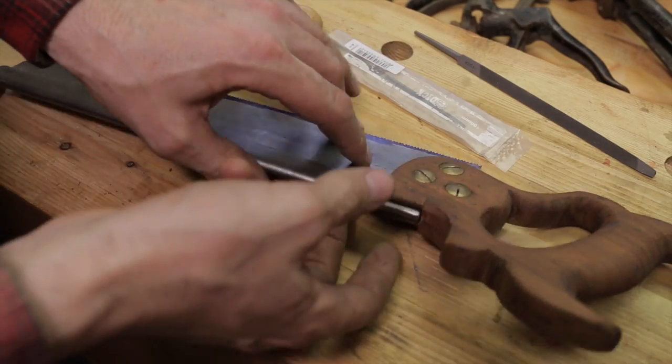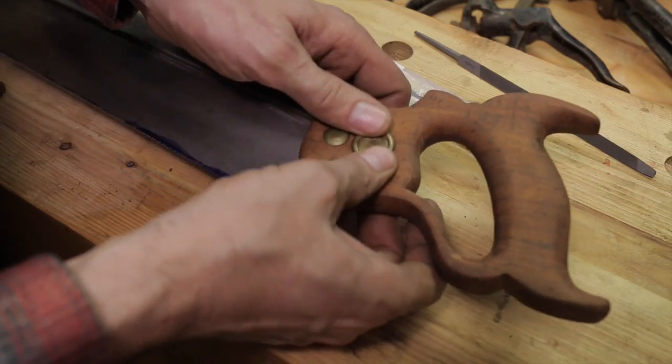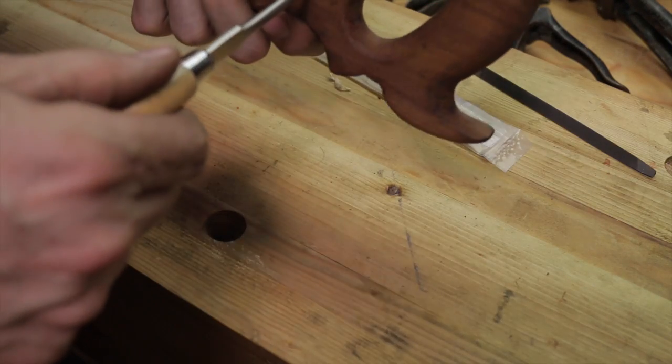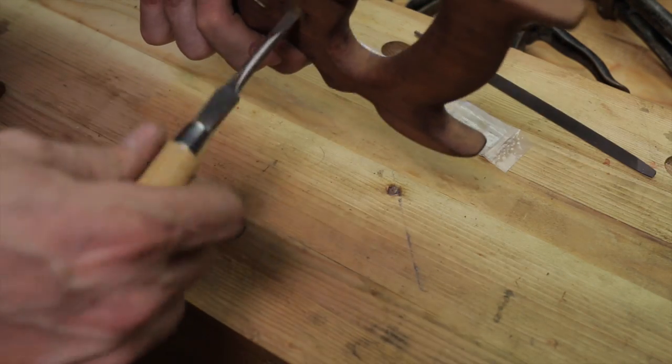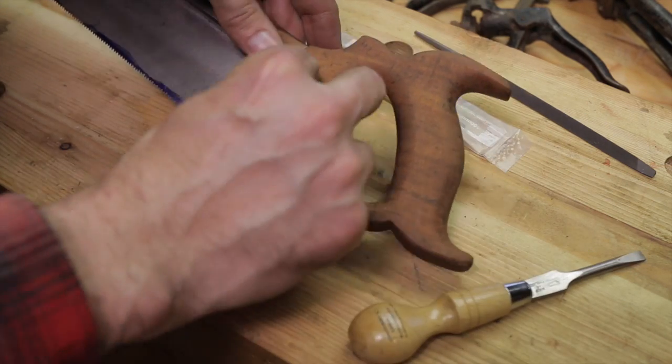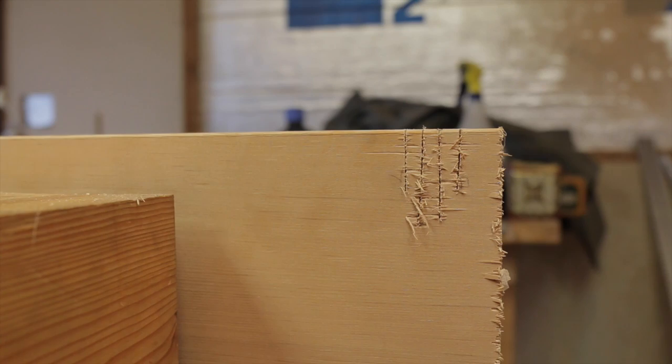So it's not like cross cut saws where we gotta have old Henry Disston. We gotta have his medallion facing the right direction, right? Can't have him upside down.